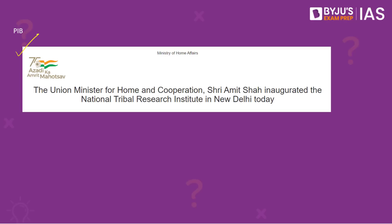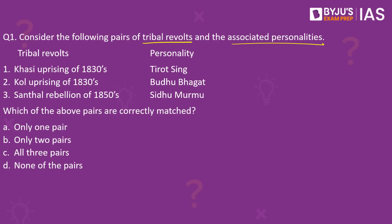He spoke about the bravery exhibited by Veer Duragavati and Rani Kamlavati, among others. Coming back to the question — the first pair is correctly matched. The Khasi Uprising of 1830s was a result of the Khasi's opposition to a road construction project through the Khasi hills. When the East India Company failed to yield to their demands, the Khasis, led by Thirod Singh, attacked a British garrison. The second pair — the Kol Uprising — was a revolt of the Adivasi Kol people of the Chota Nagpur plateau region in reaction to economic exploitation. It was led by Buddhu Bhagat, who was also the leader of the Lakra Rebellion of 1832.